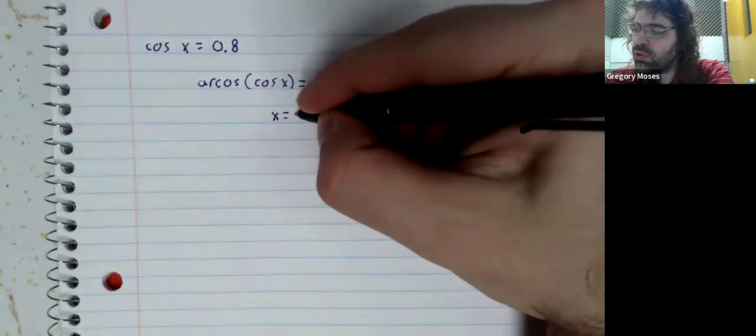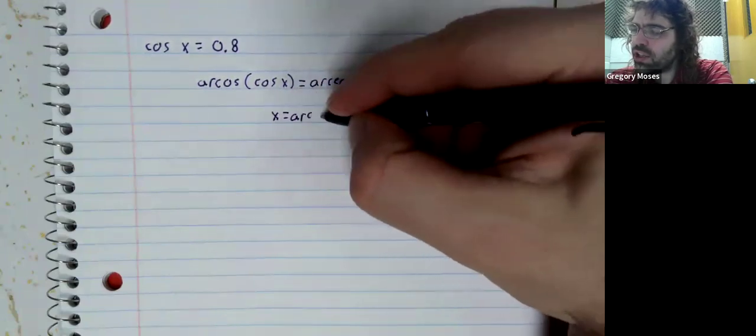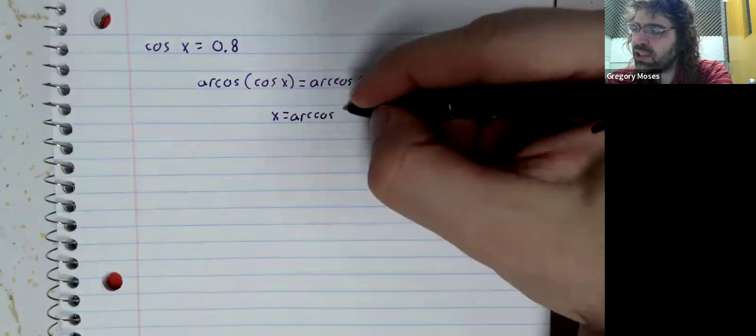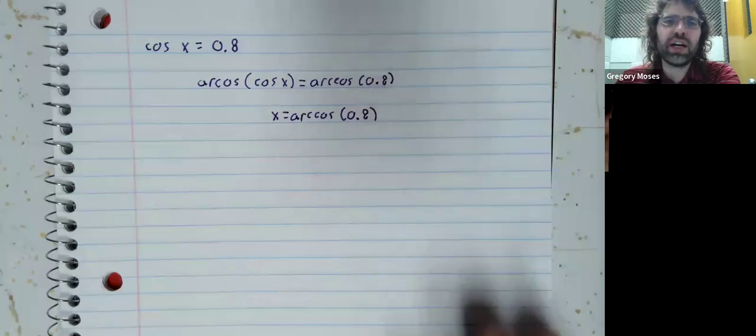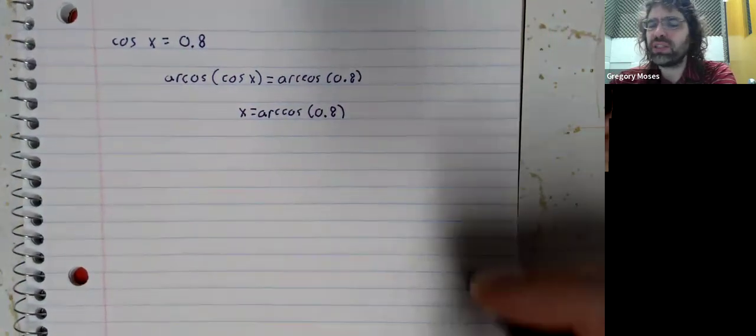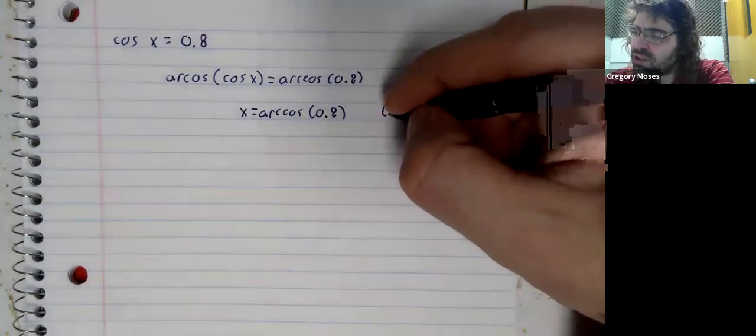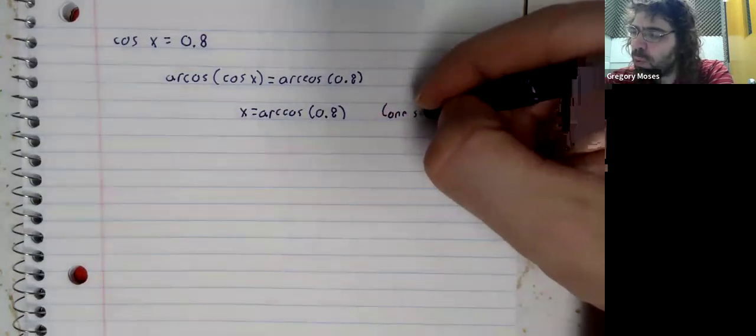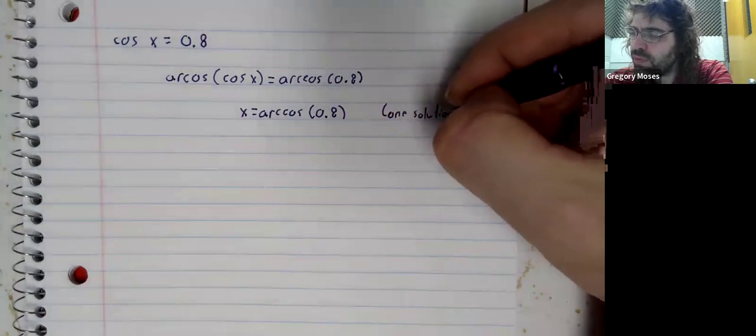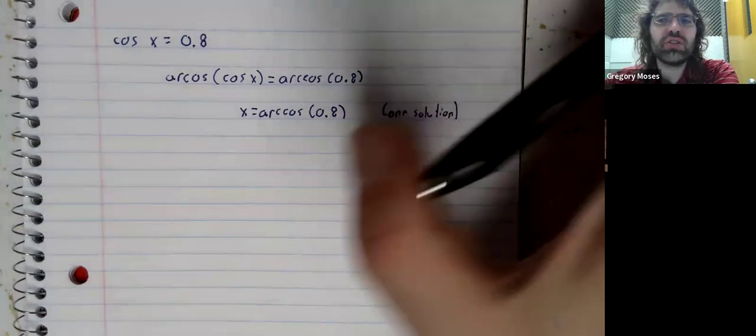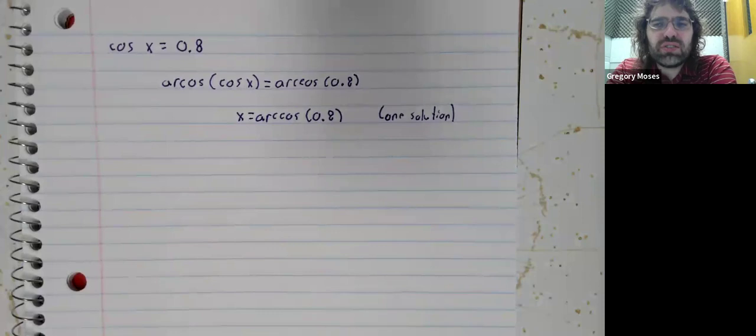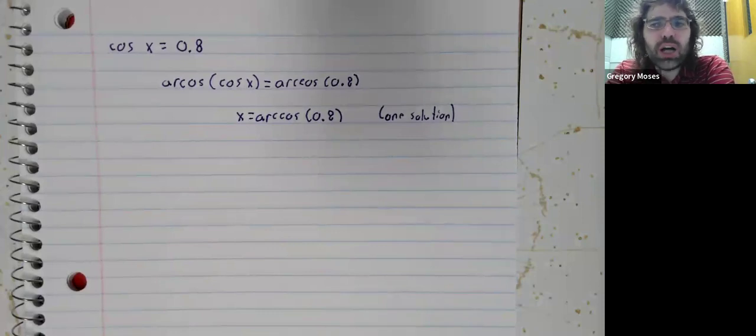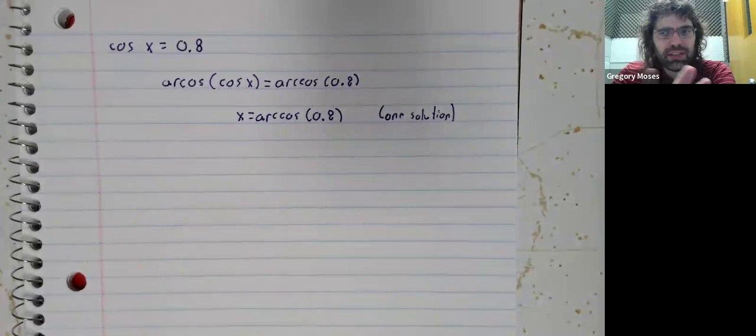We can go to our calculator and ask it, what's the arc cosine of 0.8? Now notice this is just going to give us one solution. We'll type this into our calculator and we'll get one solution. In the previous two videos we got infinite solutions, and that's going to happen here as well.